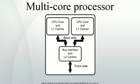While manufacturing technology improves, reducing the size of individual gates, physical limits of semiconductor-based microelectronics have become a major design concern. These physical limitations can cause significant heat dissipation and data synchronization problems. Some instruction-level parallelism methods such as superscalar pipelining are suitable for many applications, but are inefficient for others that contain difficult-to-predict code. Many applications are better suited to thread-level parallelism methods, and the demand for increased TLP led to the development of multicore CPUs.